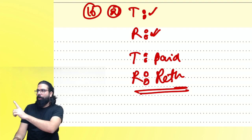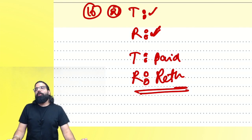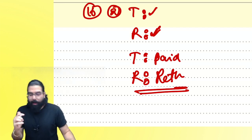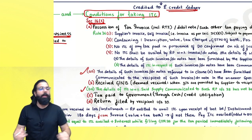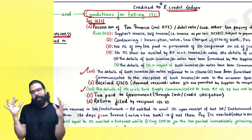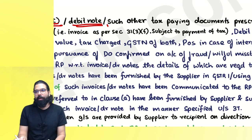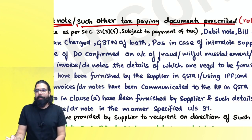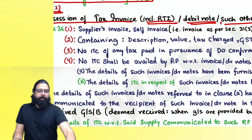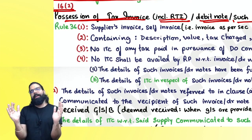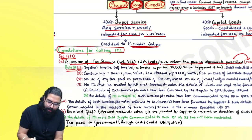The four original conditions: (1) you have the tax paying document — invoice, revised tax invoice; (2) you have received the goods; (3) tax has been paid to the government by the supplier; (4) you have filed your return. In the exam they can ask a 4-mark question on conditions for taking credit. Condition 1: possess tax invoice, revised tax invoice, debit note, and such other tax paying documents as prescribed in Rule 36.